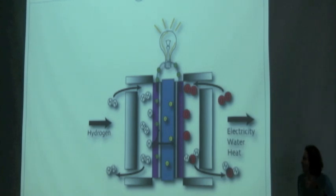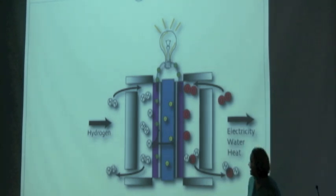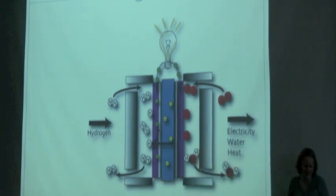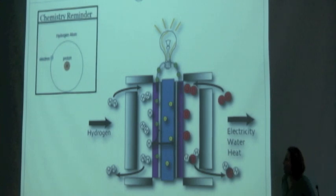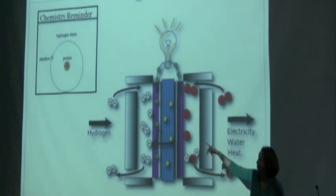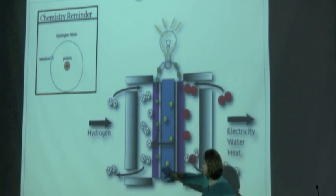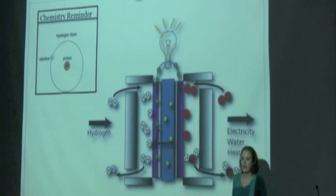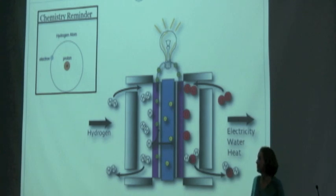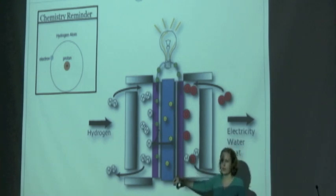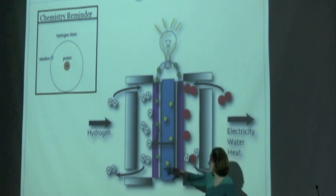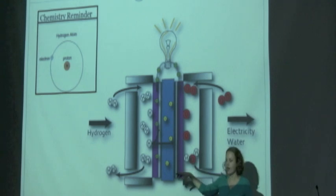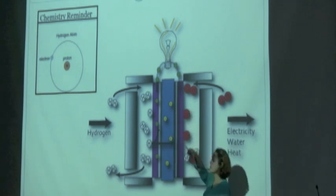So in a fuel cell, what you have is you have the hydrogen coming in on one side. And if you remember from chemistry, for a hydrogen atom, you have a proton and an electron. So what happens is that the hydrogen comes to this side of the fuel cell, and it breaks down. There's a catalyst, which Mike talked about last week, and the catalyst breaks the hydrogen into a proton and an electron. And there's a special material in the middle that only allows protons to go across this membrane. So the protons can travel across, but the electrons can't get across this middle layer. So it has to go out and around to the other side.